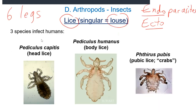Body lice is a bit more common in homeless people and people who don't wash their clothes. You can get rid of it mainly by getting clean clothes and doing laundry frequently. Pubic lice is spread typically sexually — pubic hair to pubic hair — so it's a sexually transmitted infection.